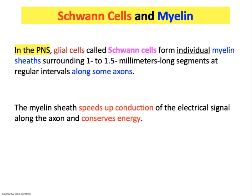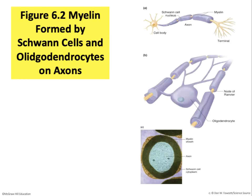Those caretakers are additional cells found strategically placed in the vicinity. One class of such supporting cells in the peripheral nervous system are called Schwann cells, named after the scientist who discovered them. Schwann cells form myelin sheaths which surround the axons of neurons, providing protection, nutrition, and assisting in the conduction of nerve impulses. One outcome of the myelin sheath is that it speeds up the rate of conduction of electrical impulses along the axon, conserving energy. Figure 6.2 panel A shows a neuron with four or five myelin sheaths in purple.